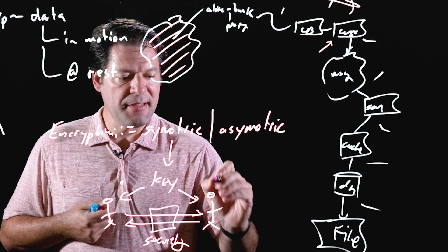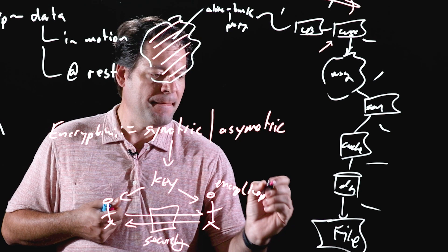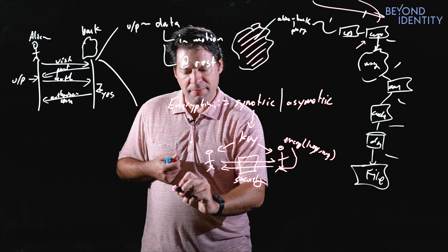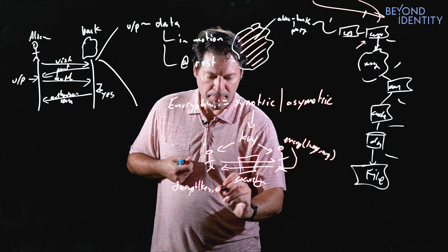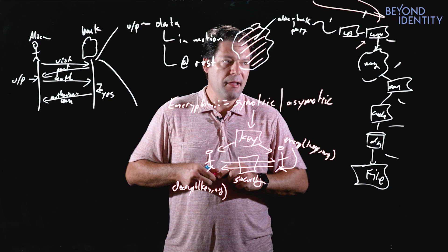They use that key to encrypt a message, send it over, and then decrypt with that same key. But there's a key distribution problem—I have to distribute that key, which is not dissimilar from the password problem.